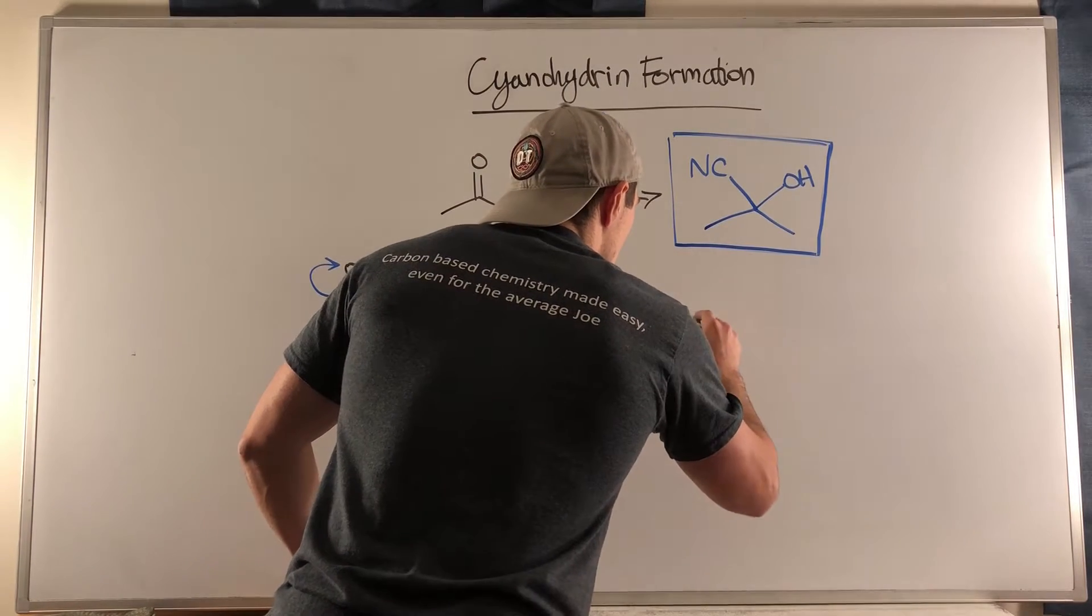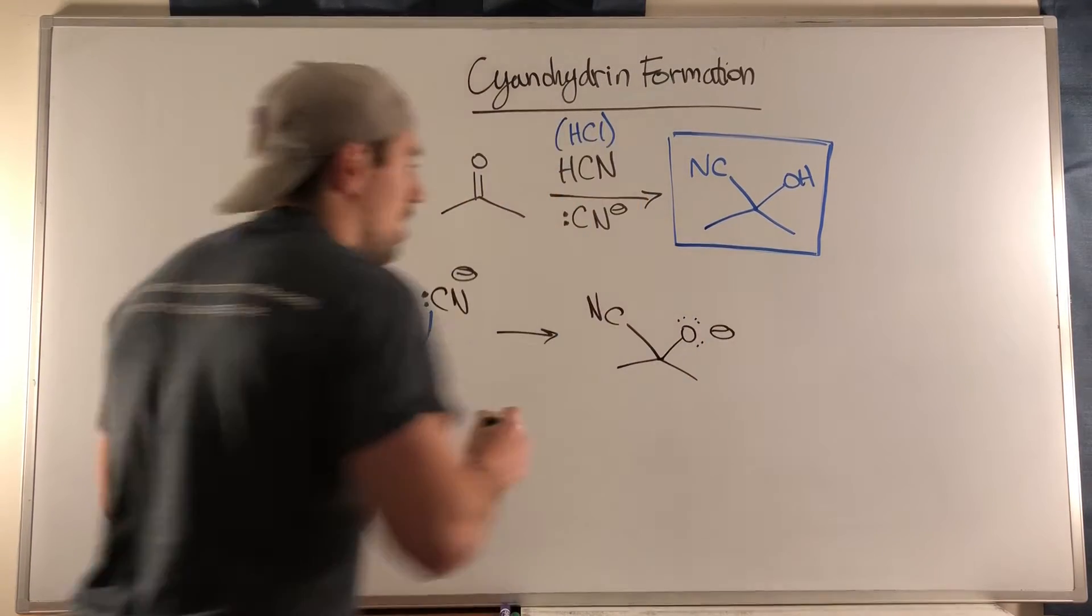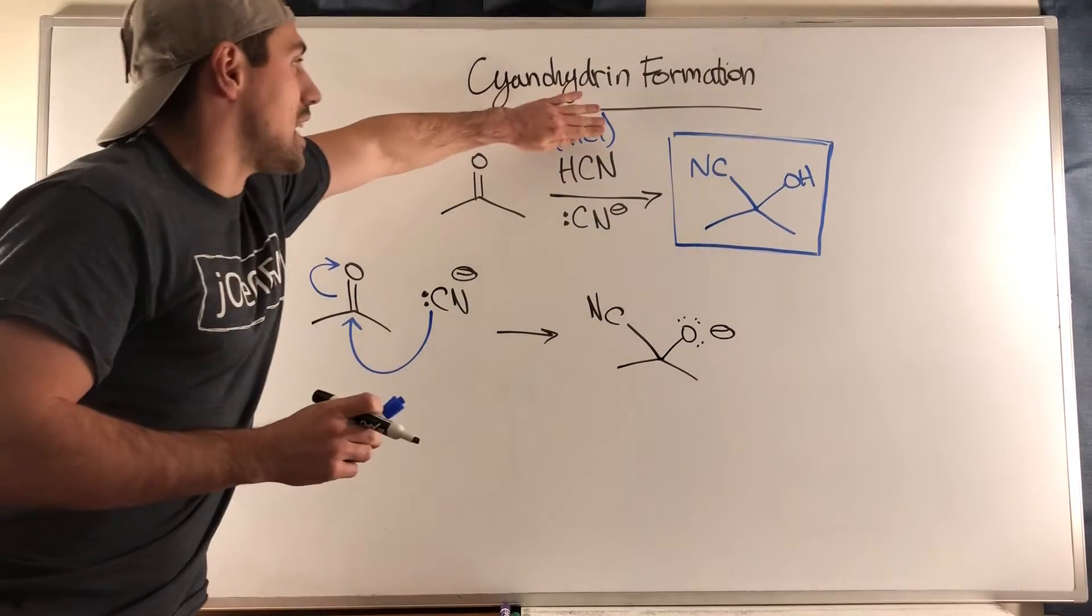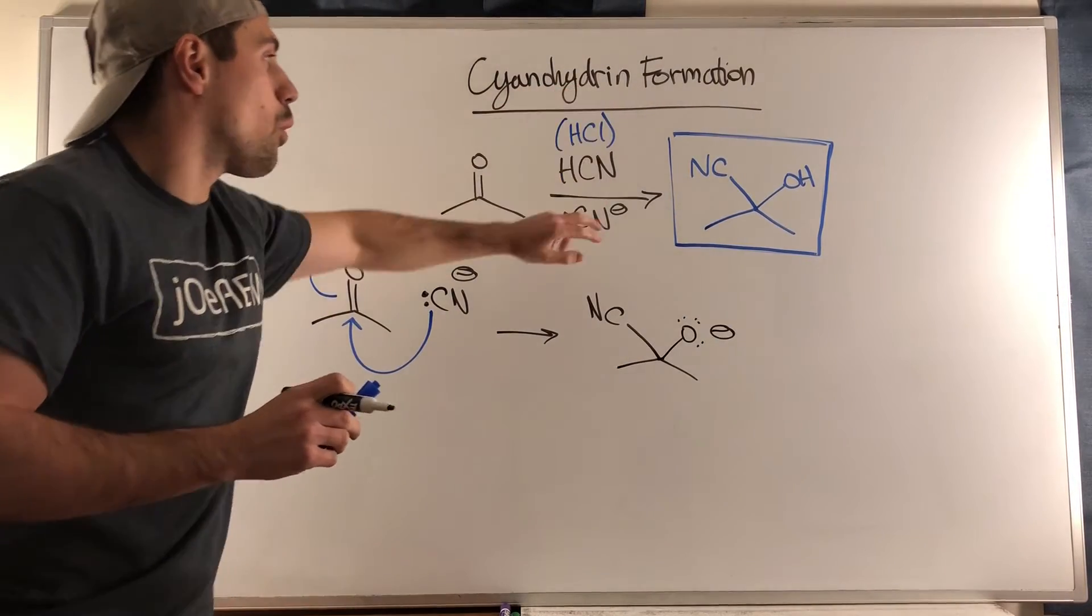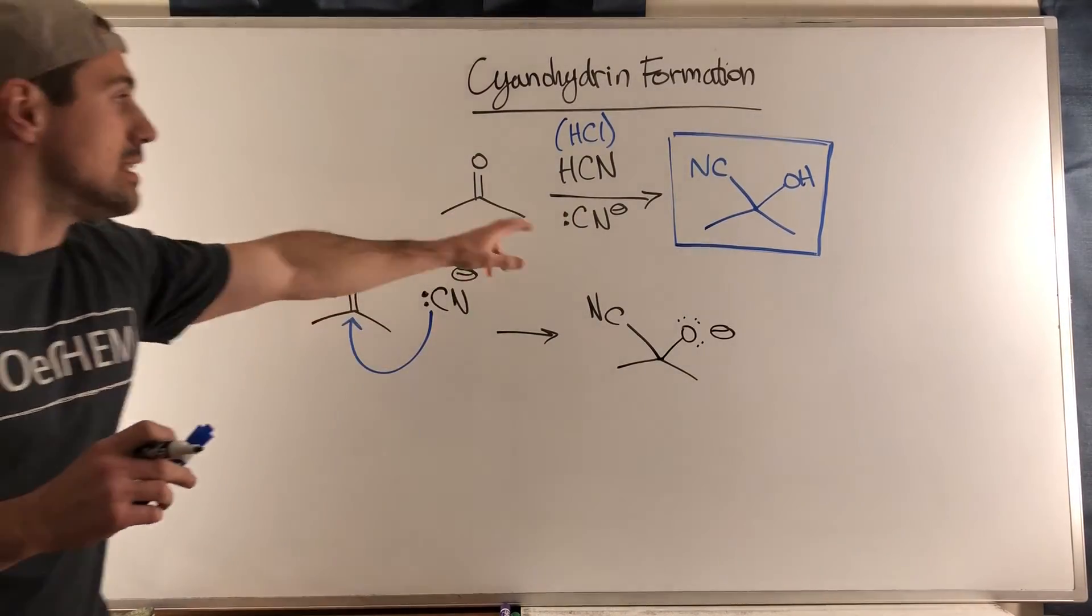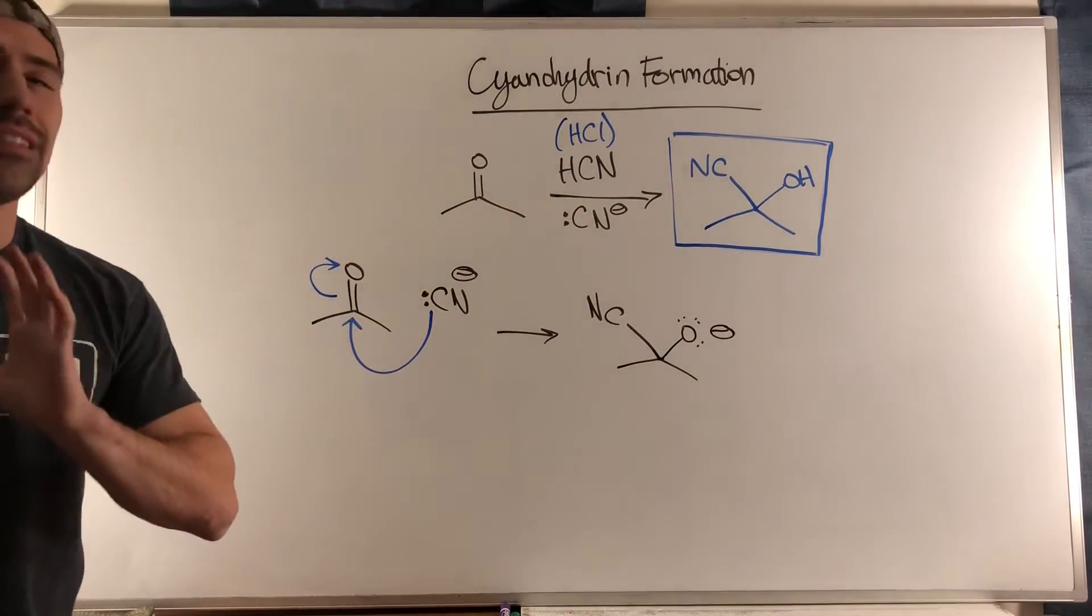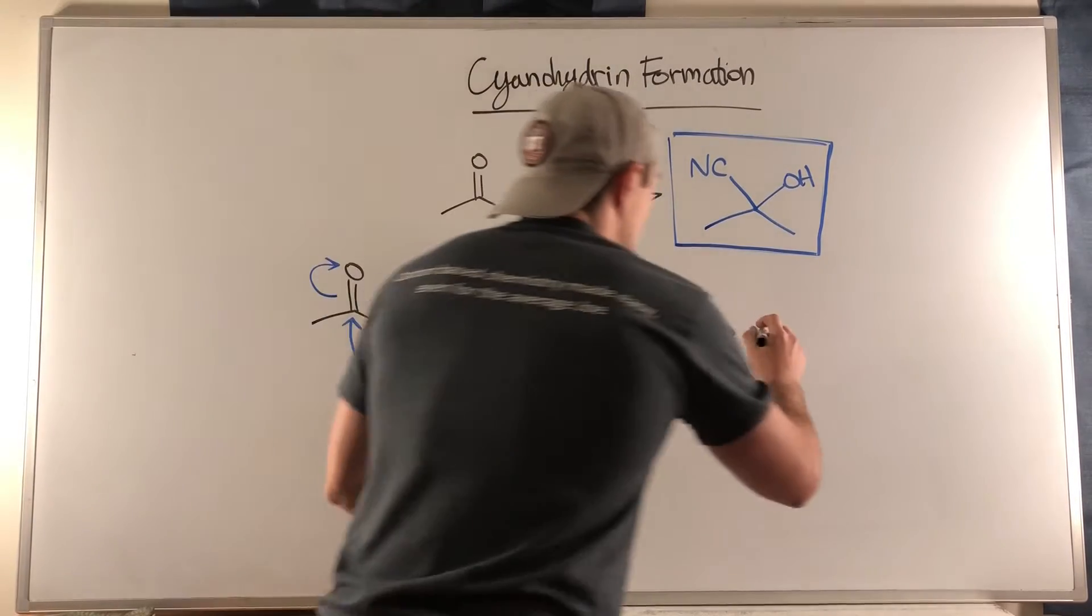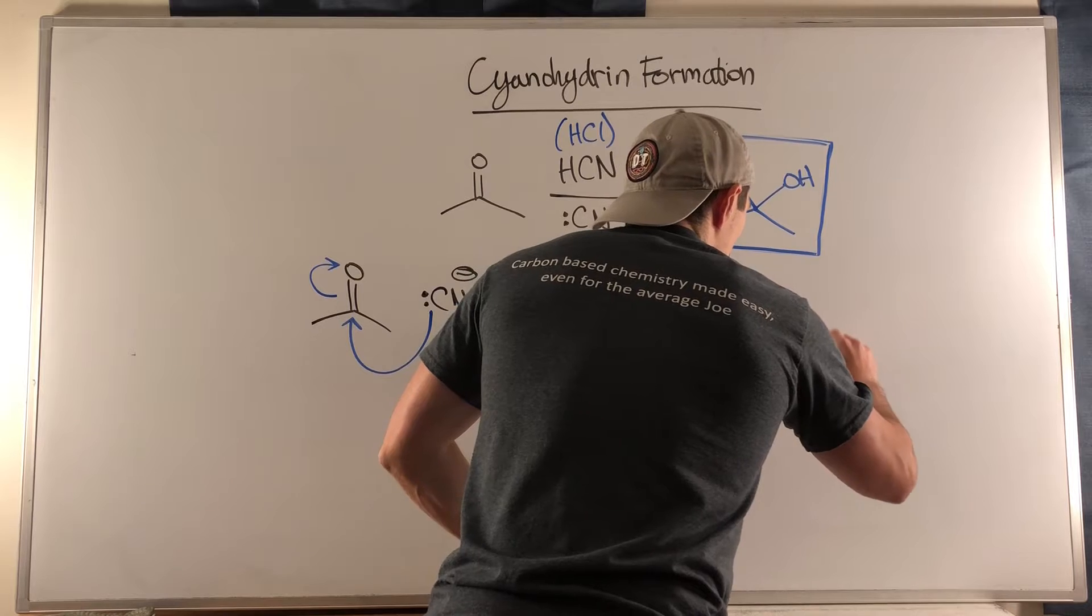What you'll commonly see is either just HCN and CN minus, or you'll see some type of sodium cyanide like sodium CN and HCl. You're going to see some acid presence because after you perform the attack, it's that acid that then performs the quenching of the negative charge, an acid-base reaction.